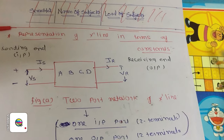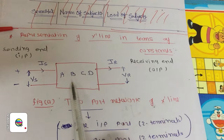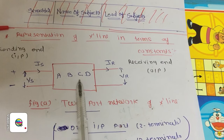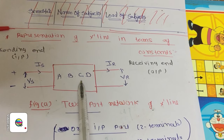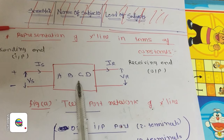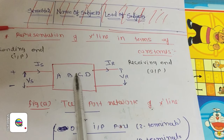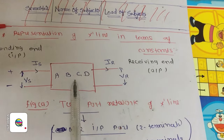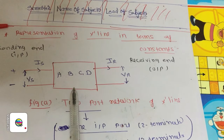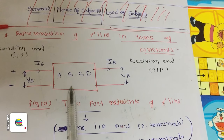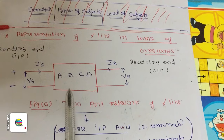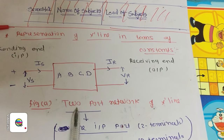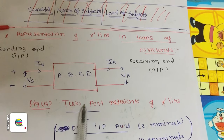Here, we are taking ABCD as constants. This is also known as ABCD constants. You can also represent the transmission line using ABCD constants. First of all, you have to know that this transmission line representation is in the form of a 2-port network.